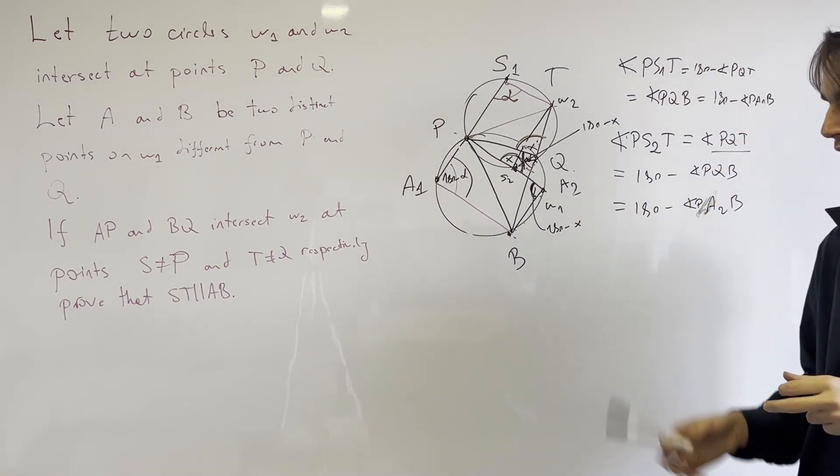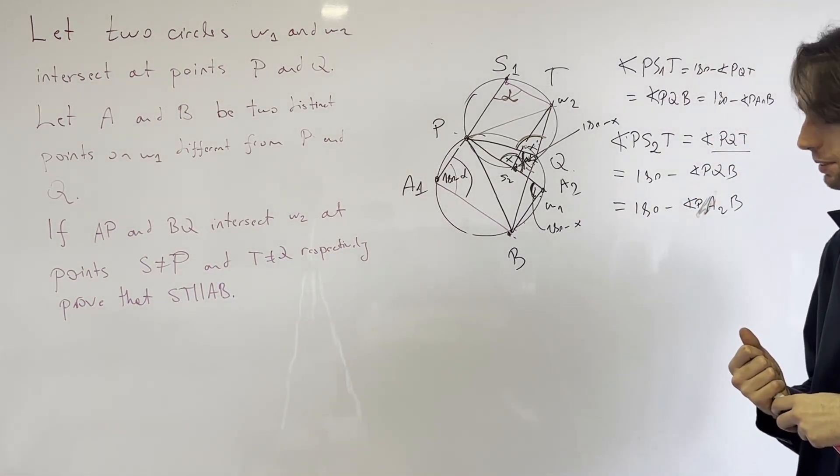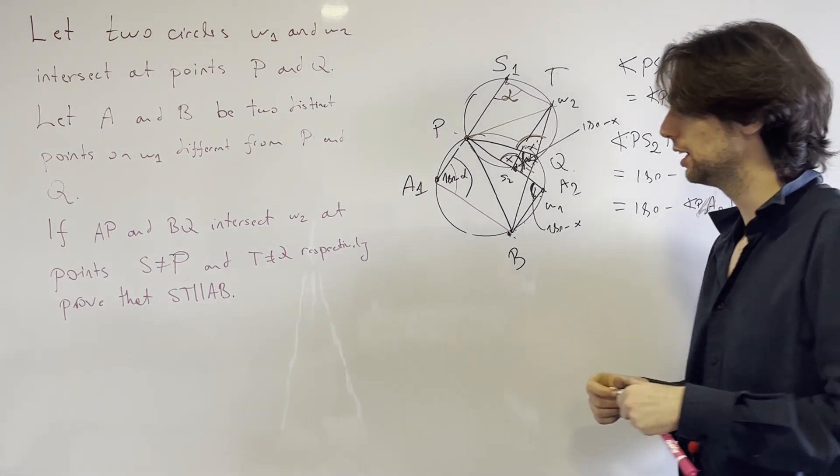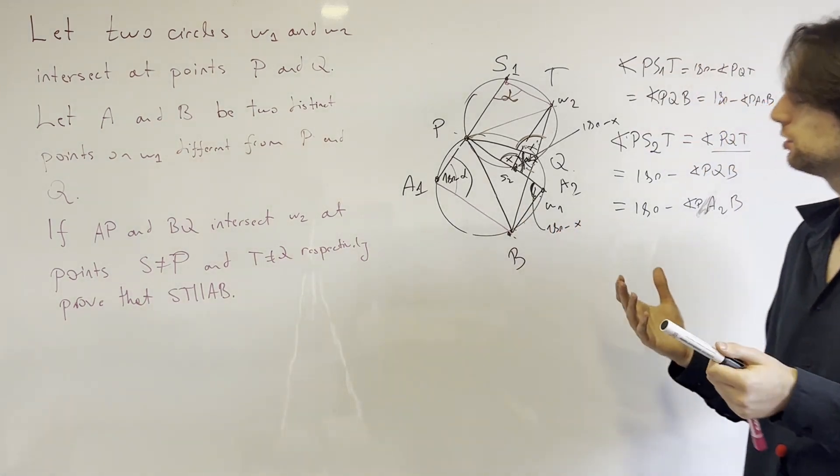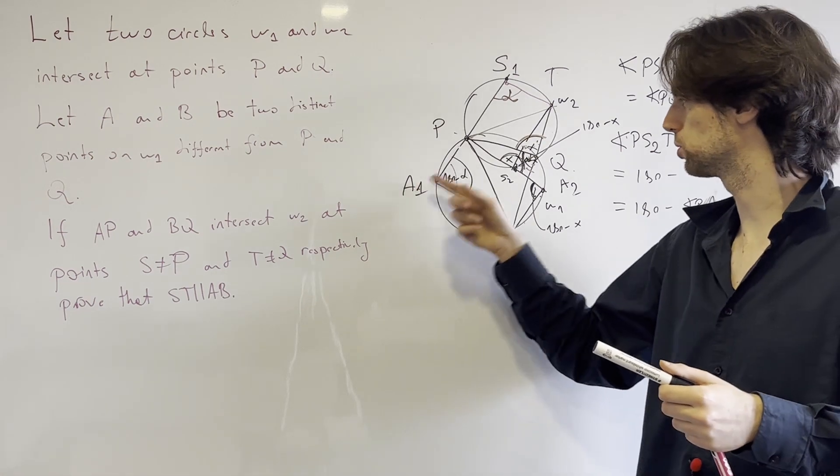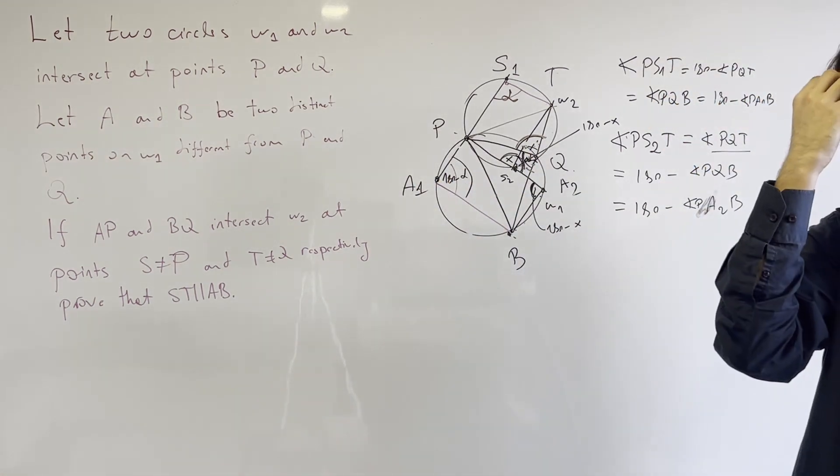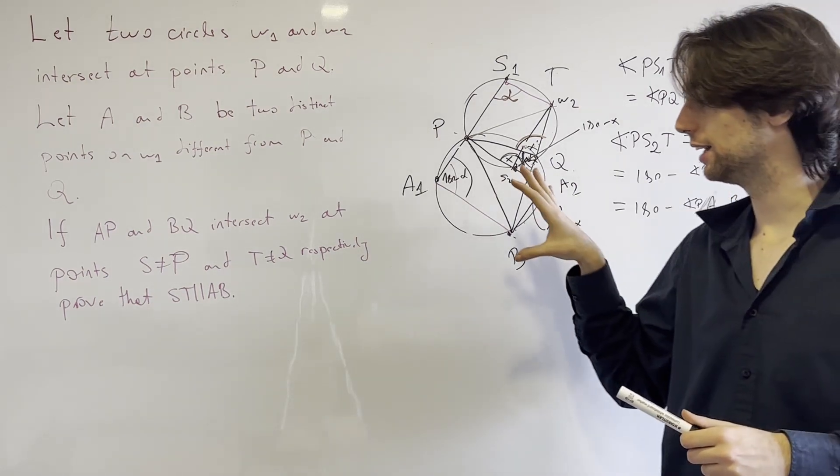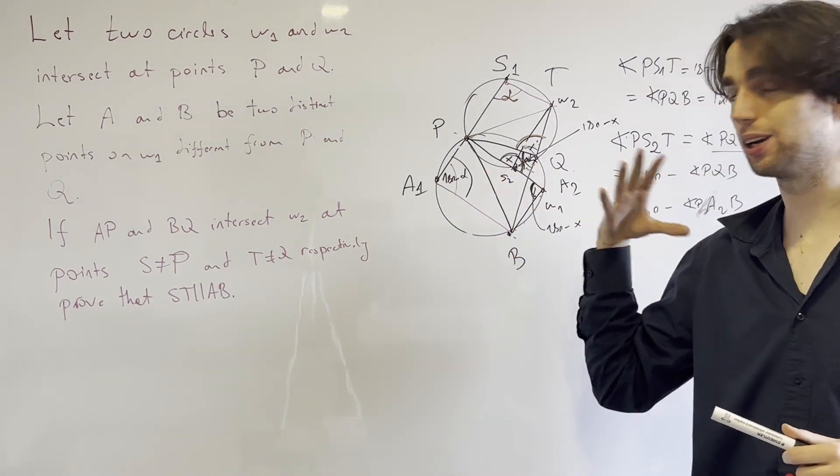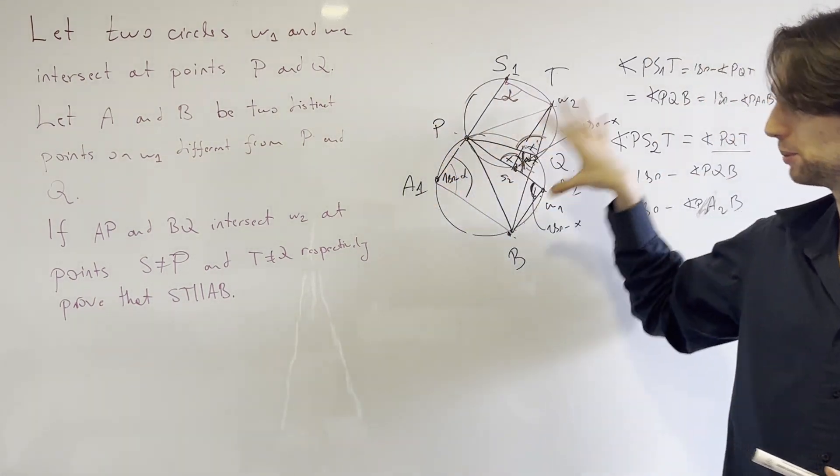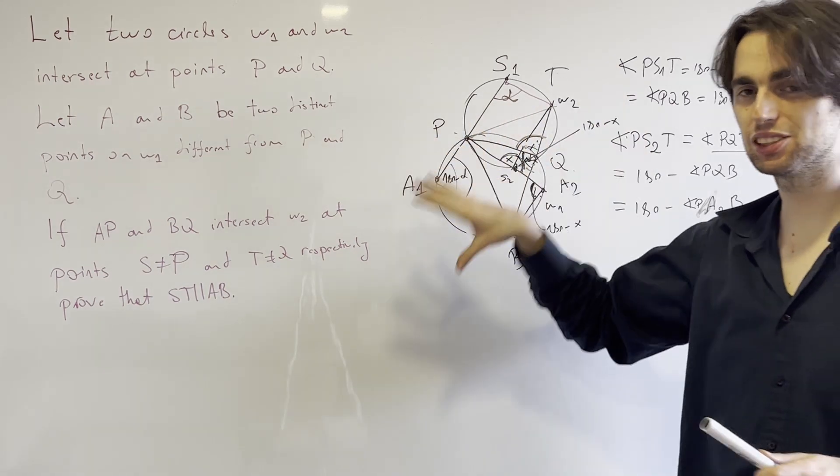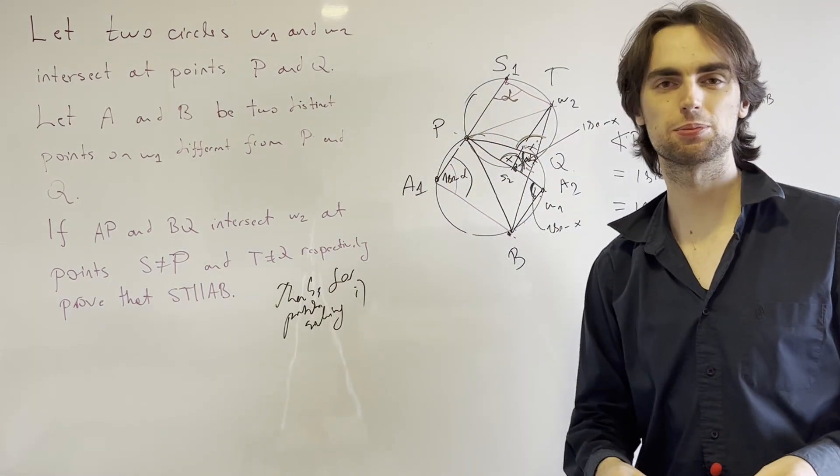So this finishes up our problem. And actually, I mean we would still need to check what happens if, say, B was over here, but really similar calculations would follow. And this finishes up our lesson on cyclic points with this problem. And as always, thanks for problem solving!